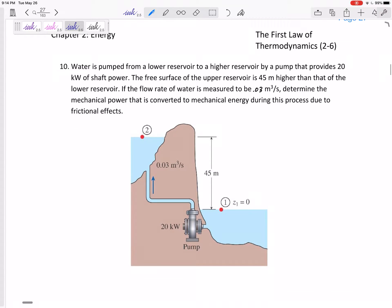So we've got water that's pumped from a lower reservoir to a higher reservoir by a pump that provides 20 kilowatts of shaft power. The free surface of the upper reservoir is 45 meters higher than that of the lower reservoir.